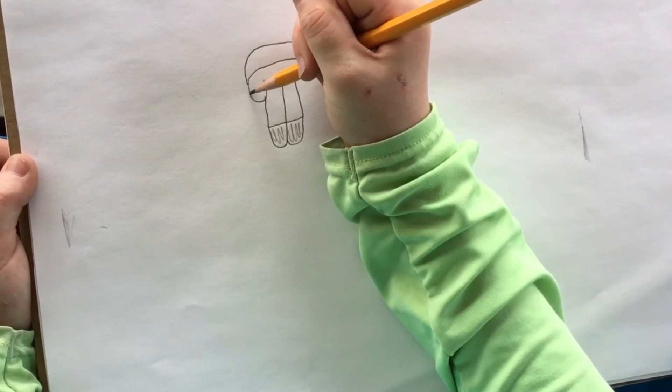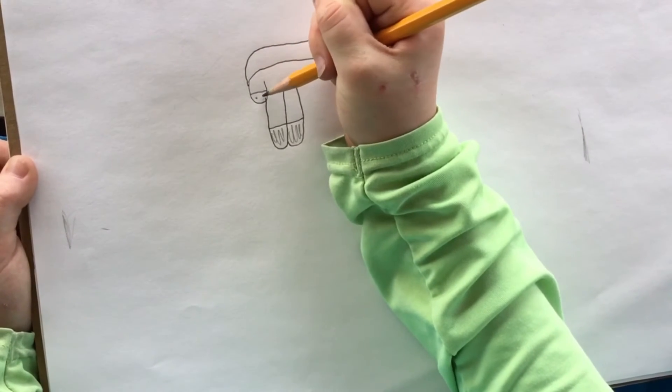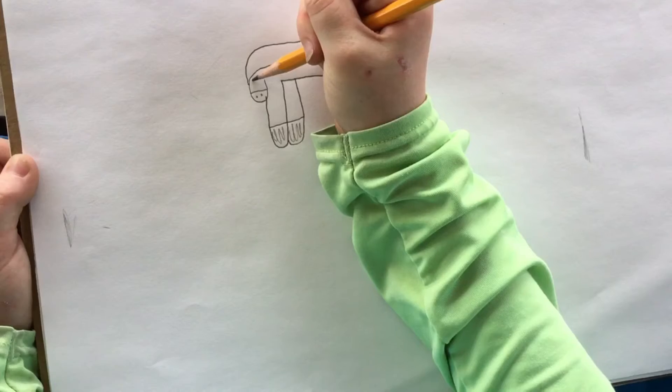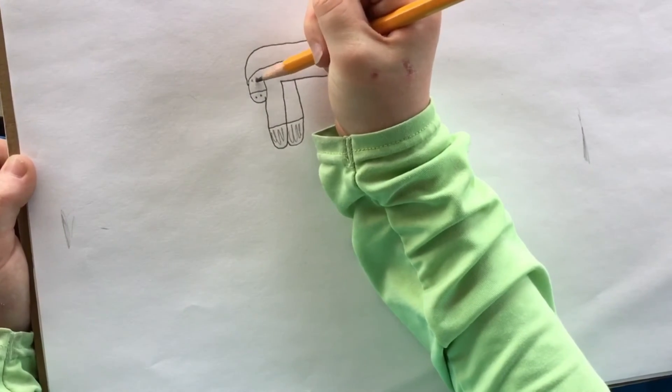Now we want to do the snout. You do a line across and two little dots, and then two eyes a little bit bigger.